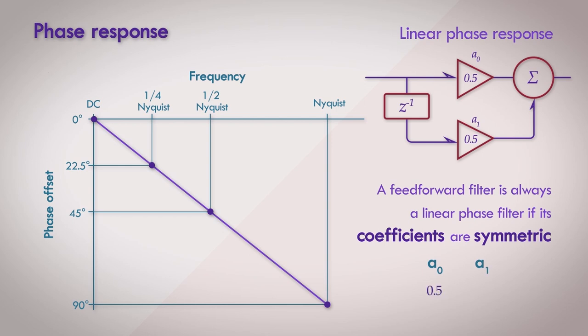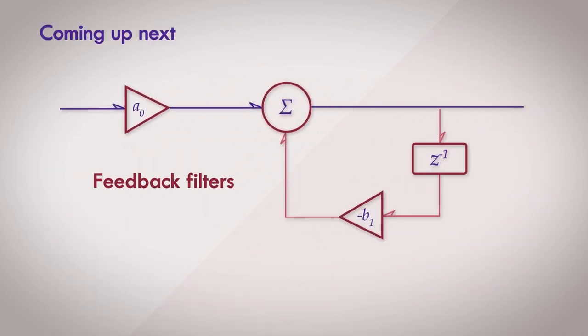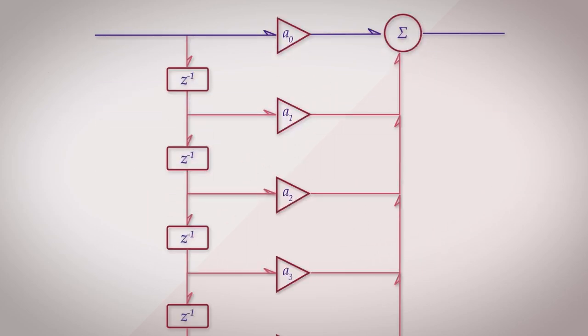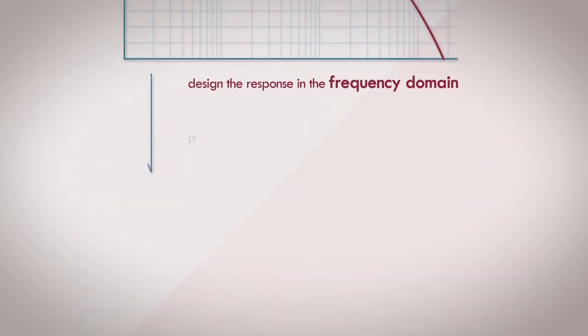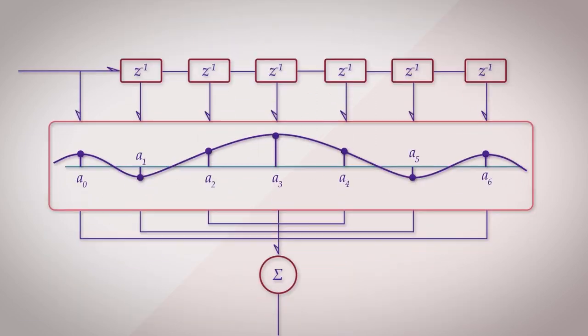After that, we'll look at a simple modification of this topology to get a first order feedback filter, and we'll do the same analysis with this. We'll see how an introduction of a feedback loop into the topology can create a starkly different response. And we'll see why this type of filter is called an infinite impulse response filter, or an IIR filter.